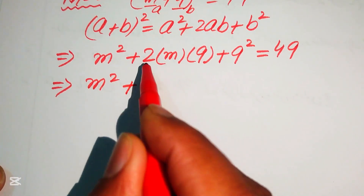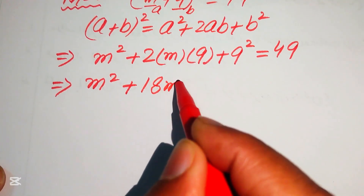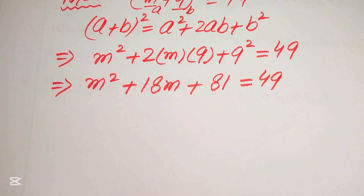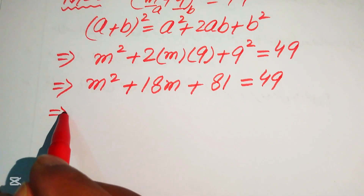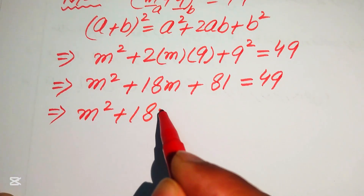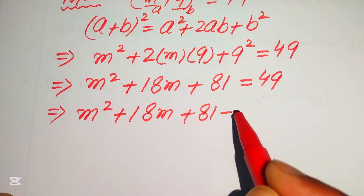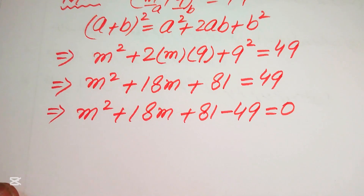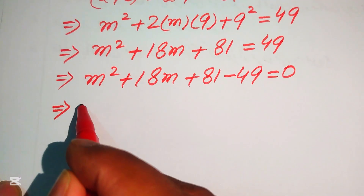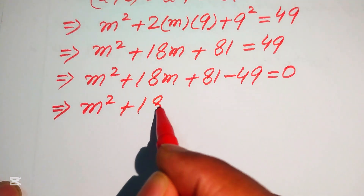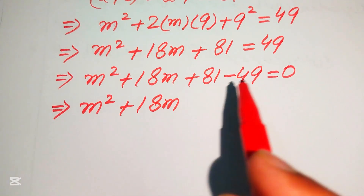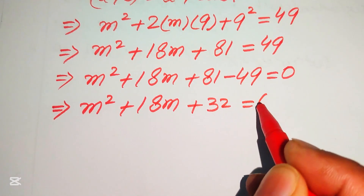This gives m² + 18m + 81 = 49. We move 49 to the left-hand side: m² + 18m + 81 − 49 = 0, and subtracting gives m² + 18m + 32 = 0.